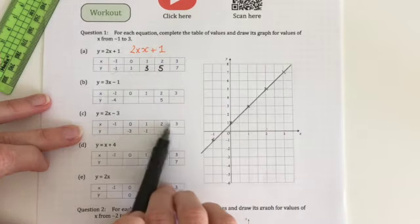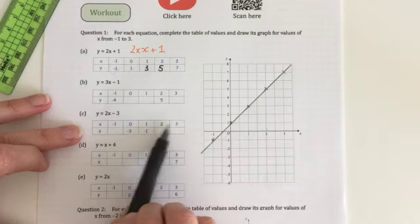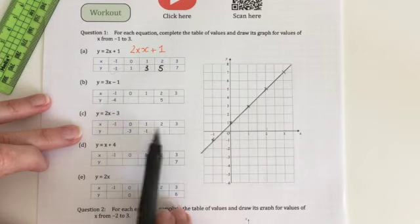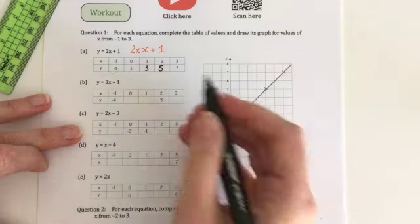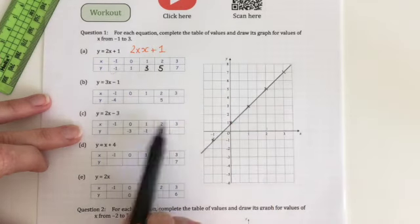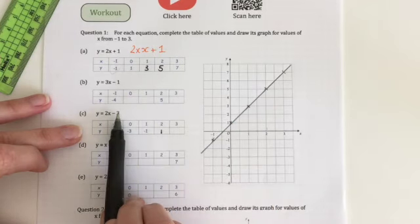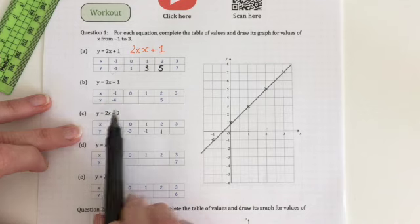I'll do the positives first. Positives are easier than the negatives, so do those first. So 2 times 2 is 4, take away 3 is 1. 2 times 3 is 6, take away 3 is 3.